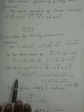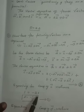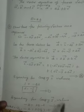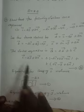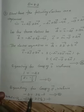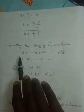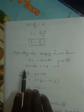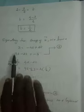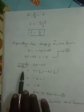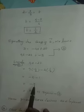Equating the coefficient of I vector: left-hand side coefficient is 1, right-hand side is minus 2s, so s equals minus 1 by 2. Equating the coefficient of J vector: left-hand side is minus 2, right-hand side is 3s minus t; substituting s equals 1 by 2. Equating the coefficient of K vector: left-hand side is 3, right-hand side is minus 4s plus 2t. Substituting s and t, the equation is satisfied, so the three vectors are coplanar.